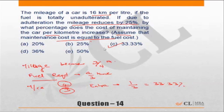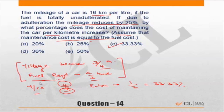This is a critical item to understand: mileage becomes three-fourths times, which means the fuel required becomes four-thirds times. Since maintenance is directly proportional to fuel, maintenance also becomes four-thirds times. If the maintenance becomes four-thirds times, the extra required is one for every three rupees originally.